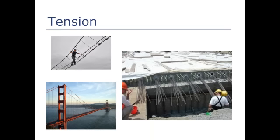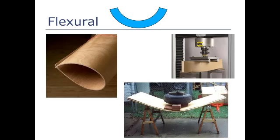In reinforced concrete we have compression and tension. But when we make a structure like a countertop, building panel, or chair, we also have to look at bending strength — flexural strength — which is just another way of describing how an object bends. If you grab a sheet of cardboard and flex it in your hands, you're feeling the effects of its bending strength. The higher its bending strength, the more you can bend it before it breaks.